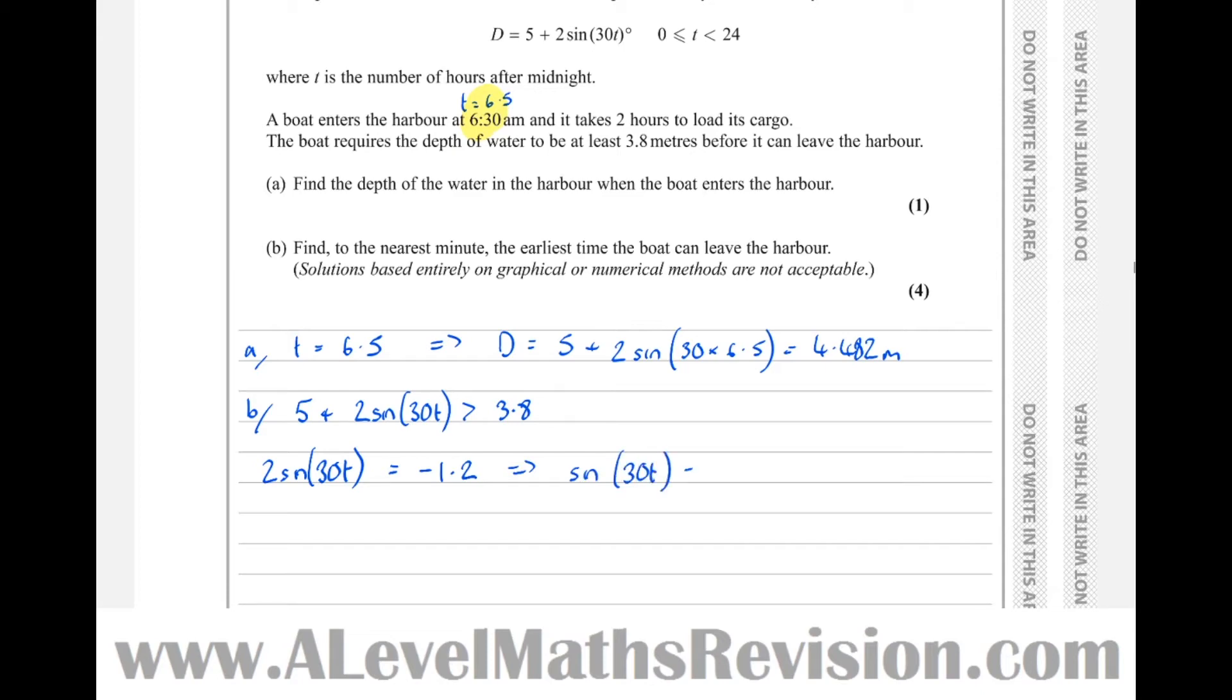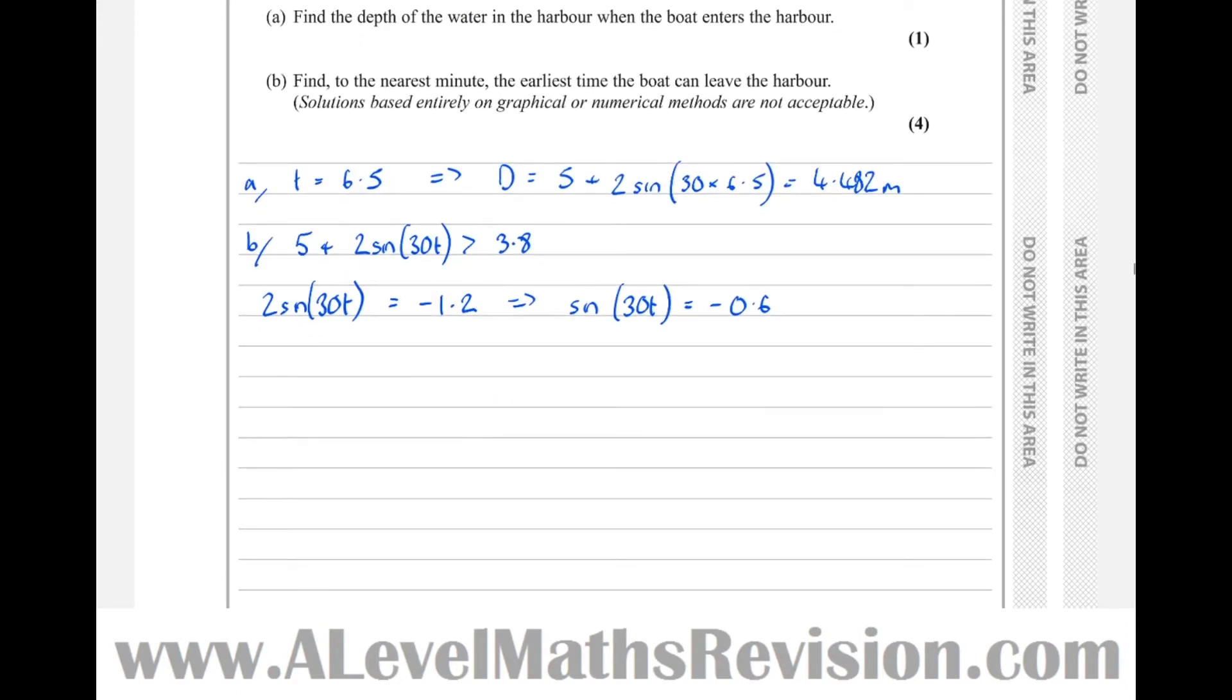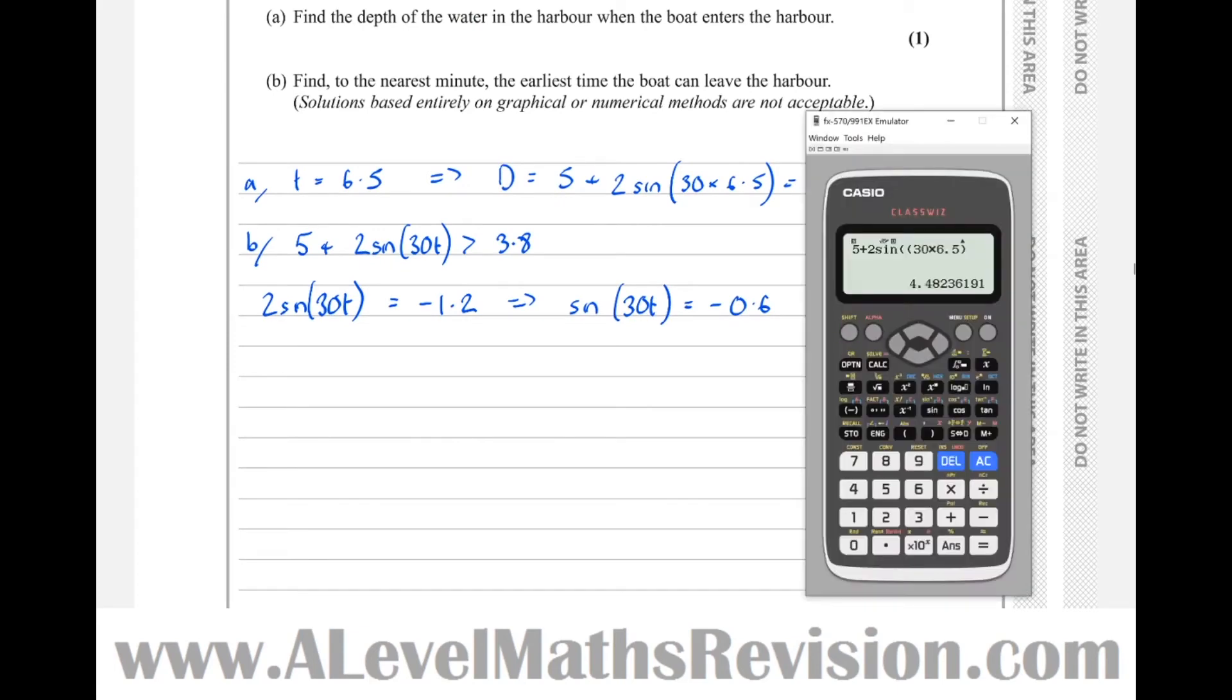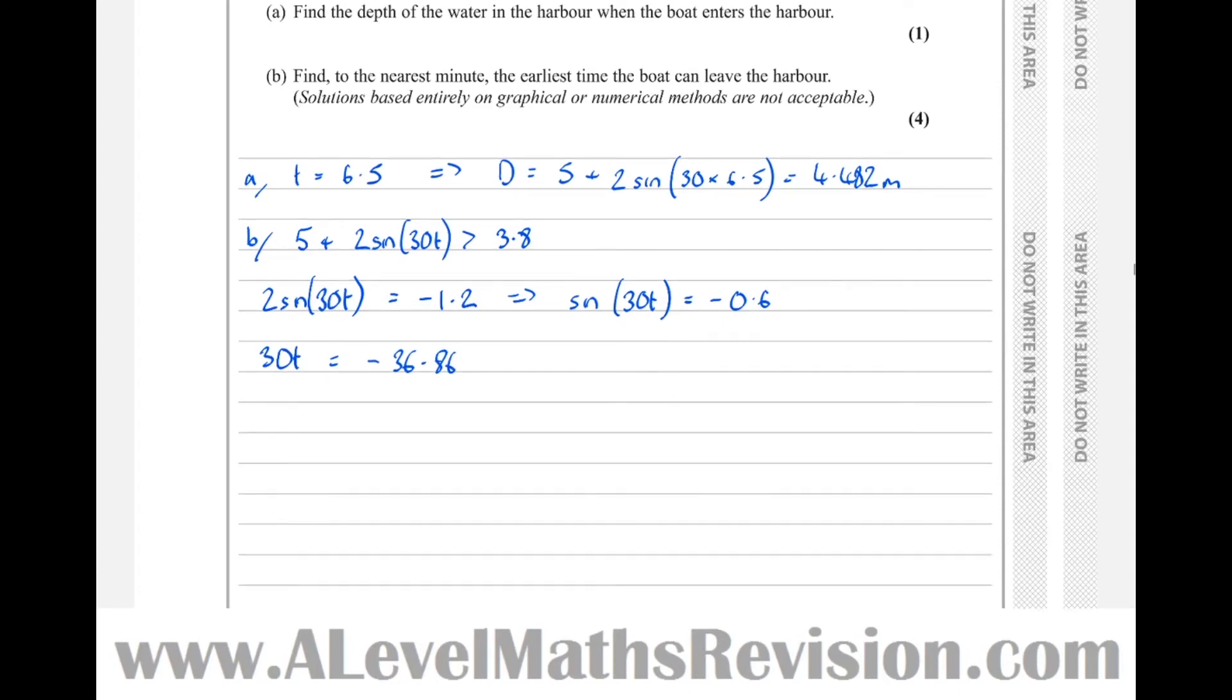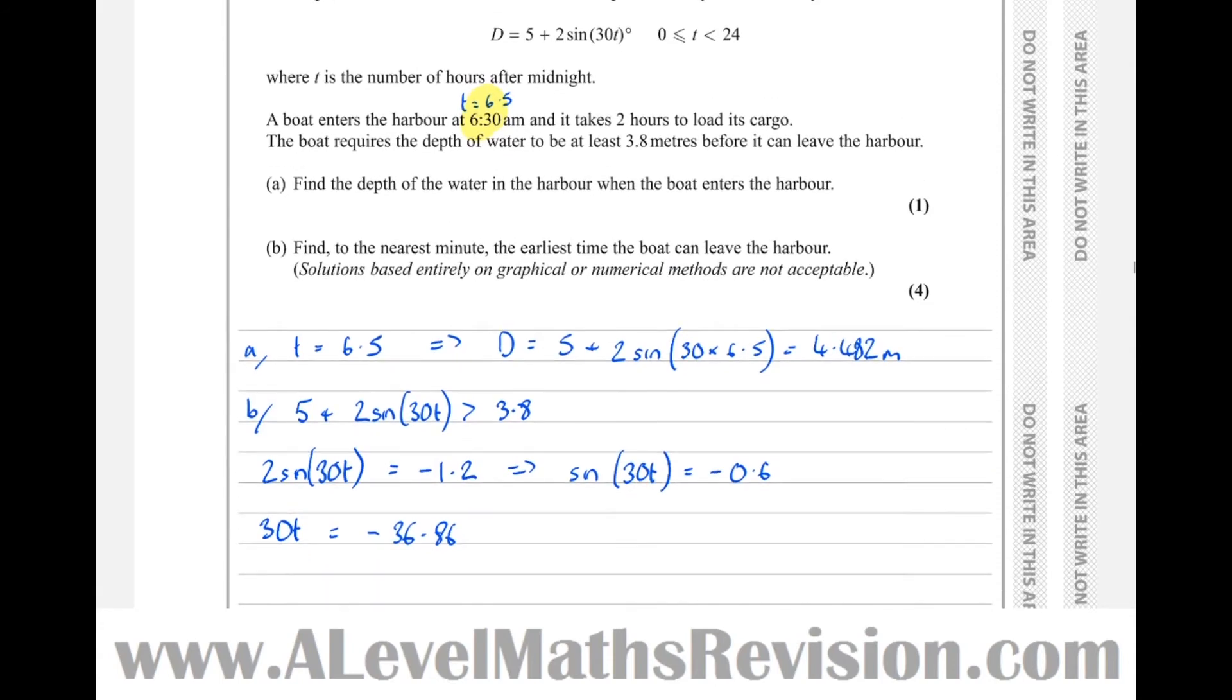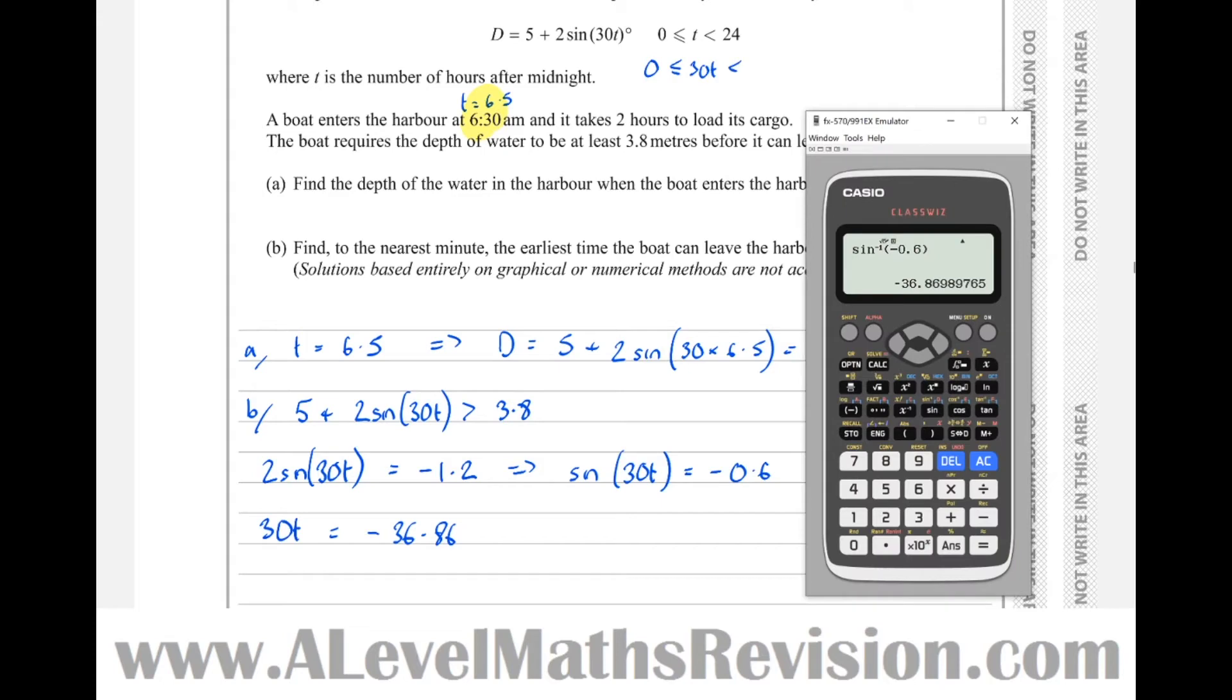Now find the solutions to that equation. If we arc sine both sides, the arc sine of minus 0.6 equals minus 36.86, so 30t equals minus 36.86. If I go back to the question, notice I've solved this for 30t, but the limits are in terms of t. So we change those limits to be 30t. If I times all of these by 30, I get 0 less than or equal to 30t less than 720, so the valid solutions are in the domain 0 to 720.